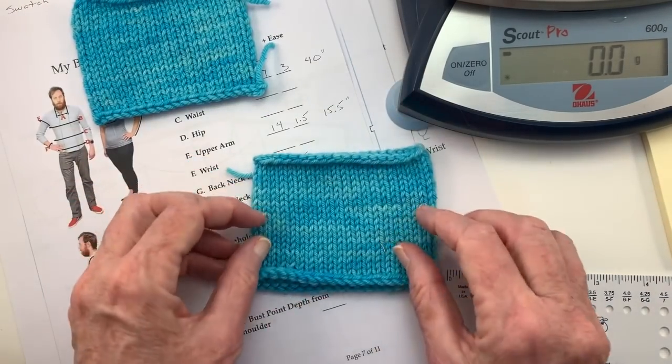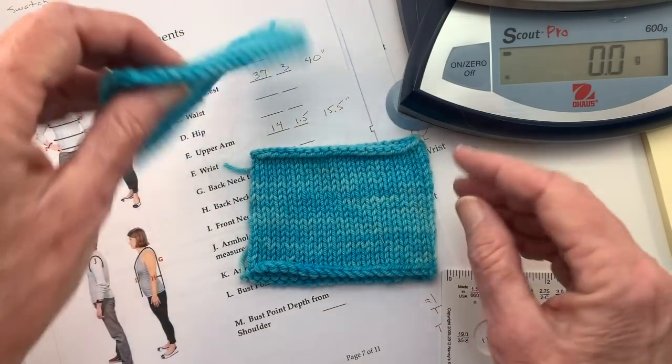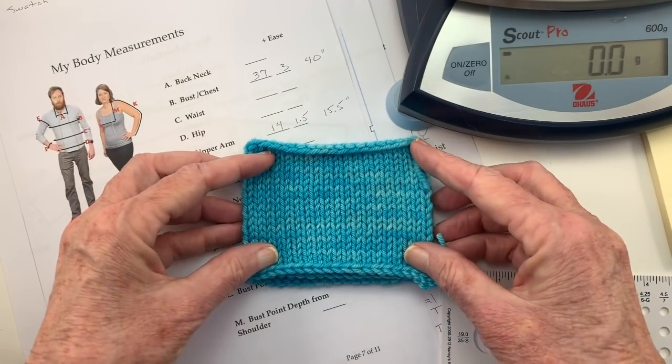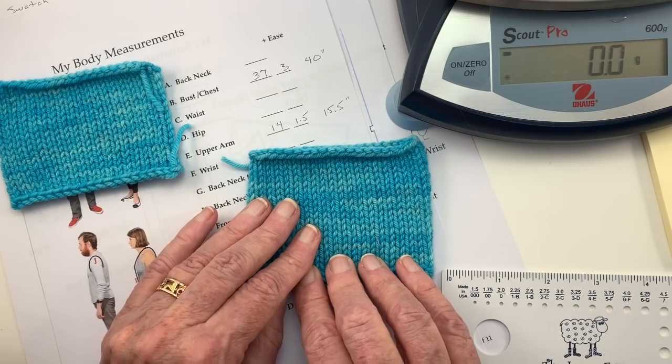This swatch measures exactly twice as wide, and is the same height, and therefore has twice the square area.